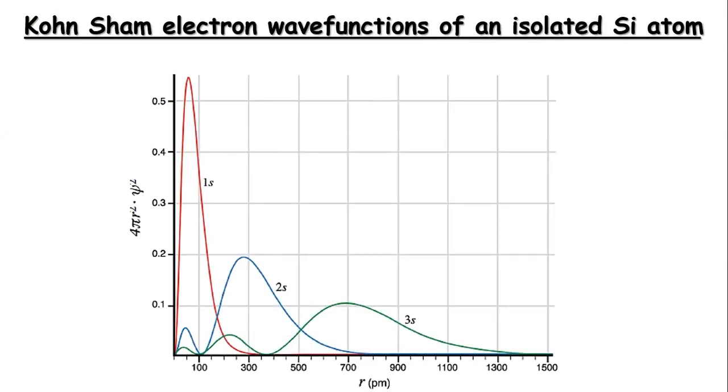This is a plot for core and some valence electron wave functions of an isolated silicon atom. As you can see clearly, the tightly bound core electrons in atoms are associated with wave functions with a shorter wavelength.